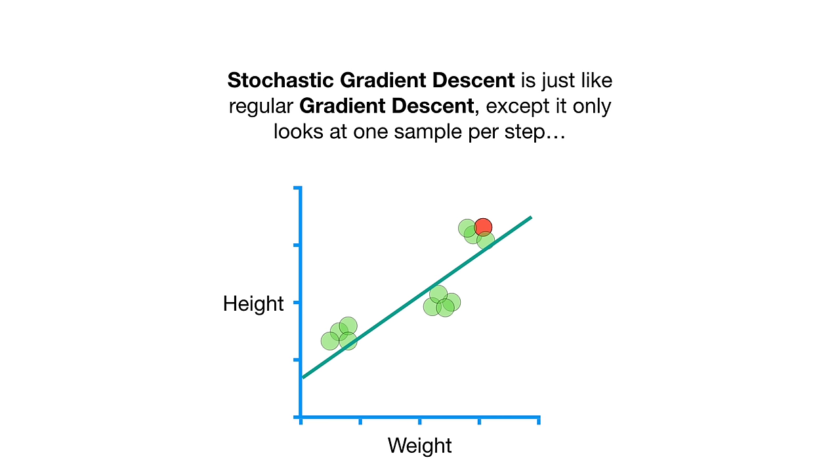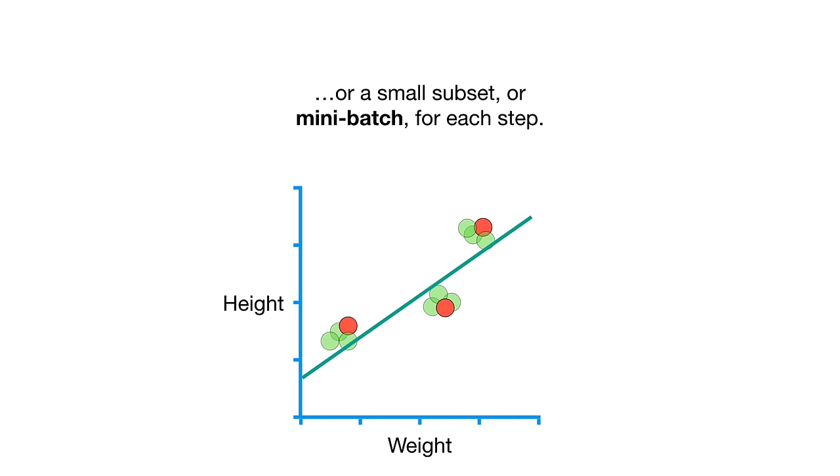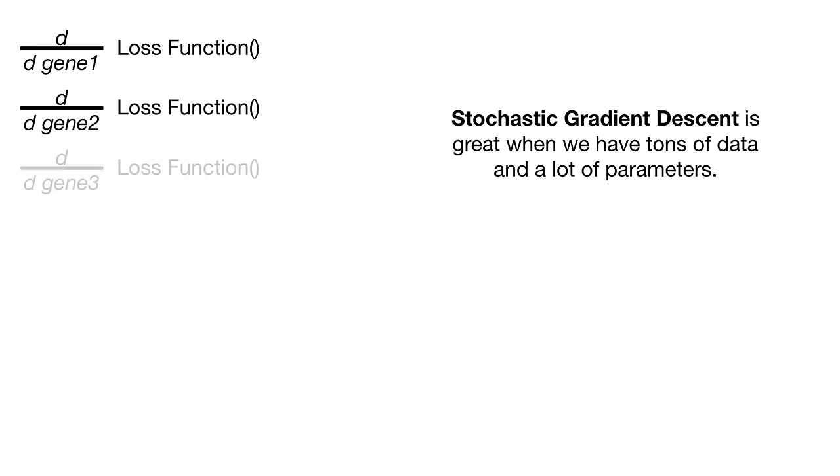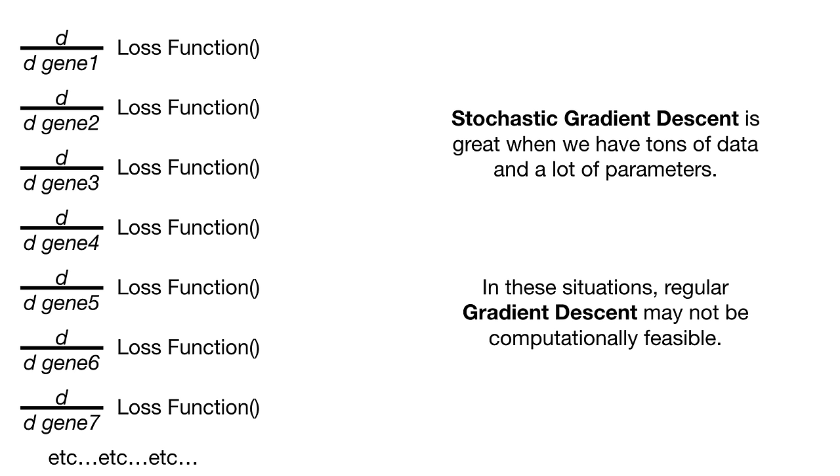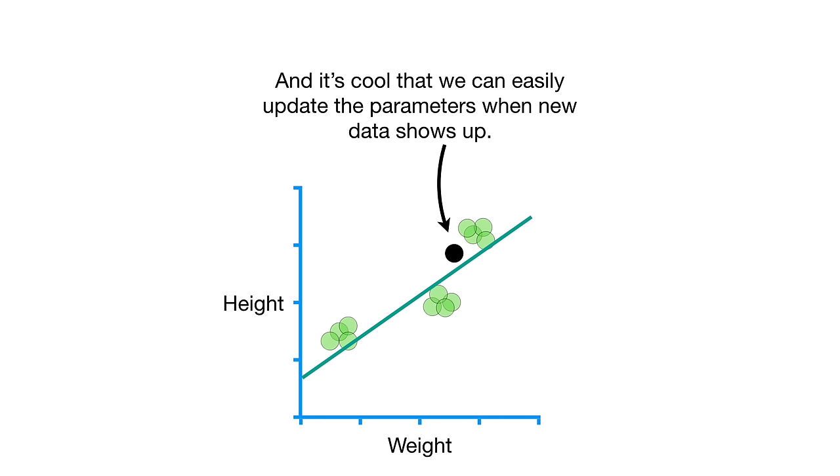In summary, stochastic gradient descent is just like regular gradient descent, except it only looks at one sample per step, or a small subset or mini-batch for each step. Stochastic gradient descent is great when we have tons of data and lots of parameters. In these situations, regular gradient descent may not be computationally feasible. And it's cool that we can easily update the parameters when new data shows up.